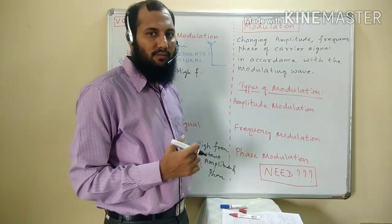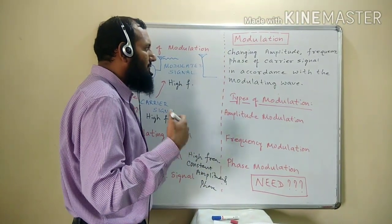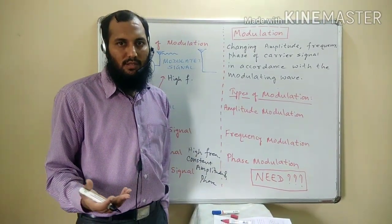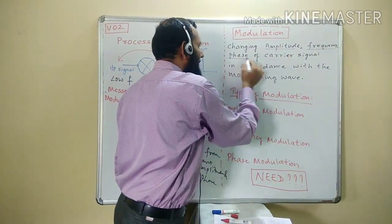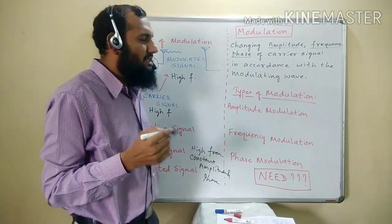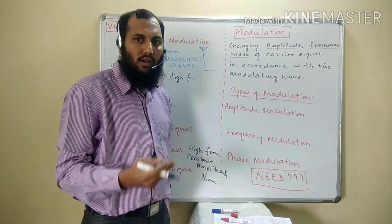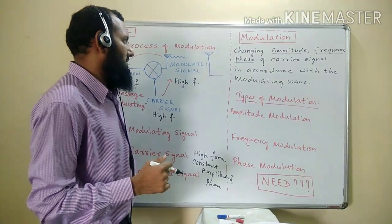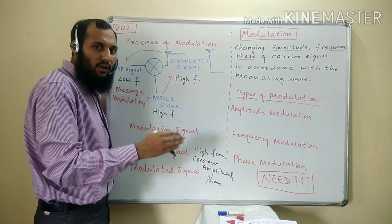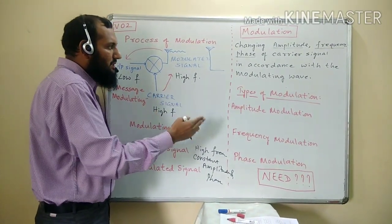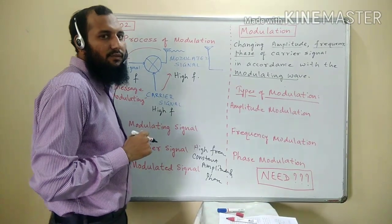Now, coming to the basic definition of modulation. Modulation is a process of changing some characteristic of a wave. That characteristic may be amplitude, frequency, or phase of the carrier signal. So in the process of modulation, the amplitude, frequency, or phase of the carrier signal is changed in accordance with the modulating wave.